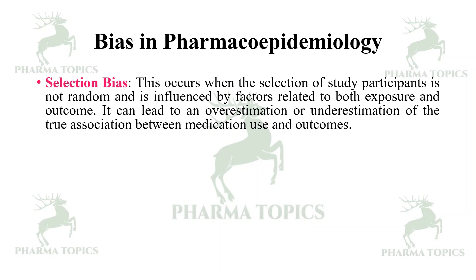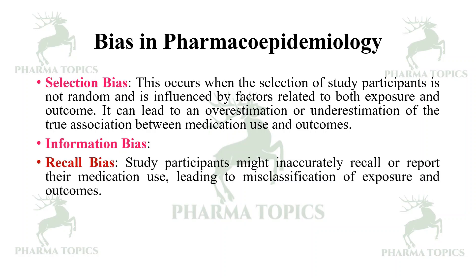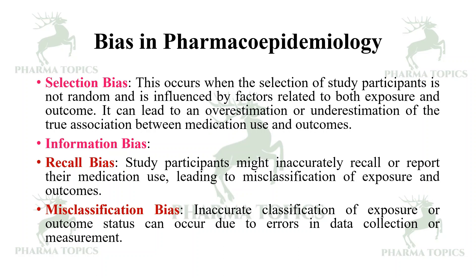There are different types of bias. Selection bias occurs when the selection of study participants is not random and is influenced by factors related to both exposure and outcome, leading to overestimation or underestimation of the true association. Information bias includes recall bias, where study participants might inaccurately recall or report their medication use, leading to misclassification of exposure and outcomes.